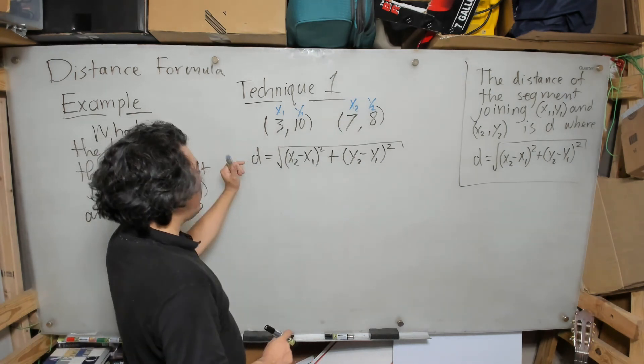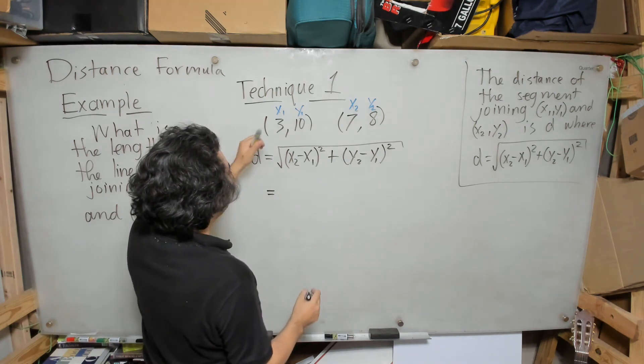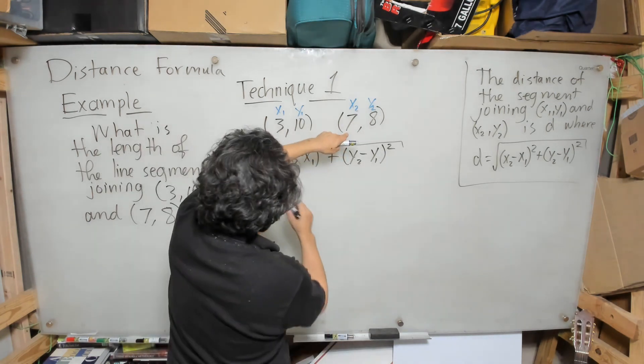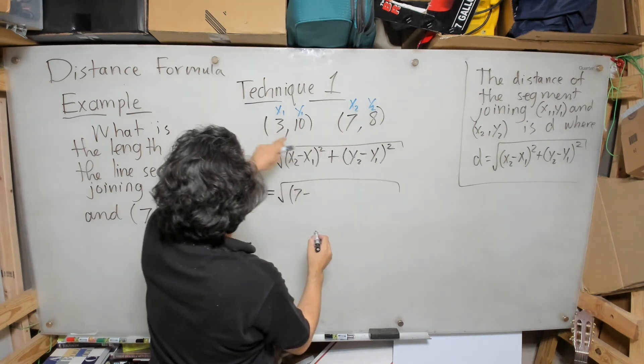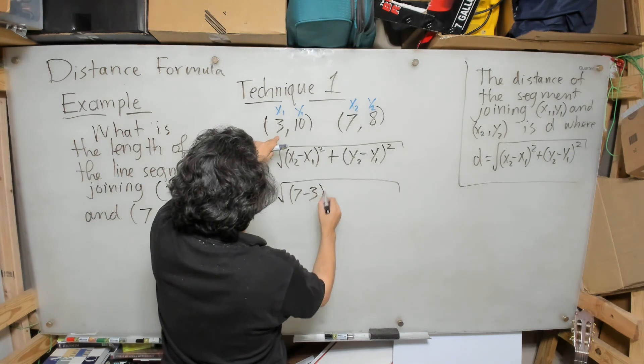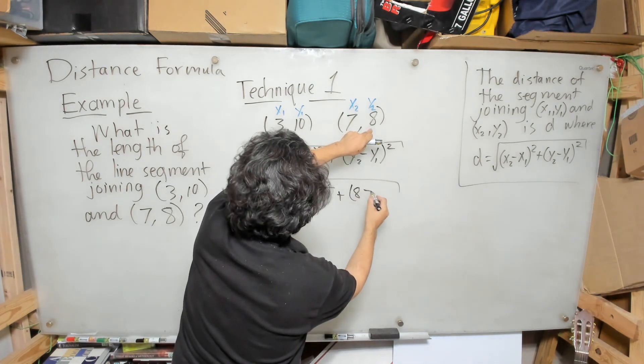Anyway, so I write it down like this. Now I'm going to plug in. Because I went through the labor of labeling, I know that my x₂ is 7, so I'm going to do the square root of 7 minus my x₁ which is 3, and that's going to be squared, plus my y₂ which is 8 minus my y₁ which is 10, squared.